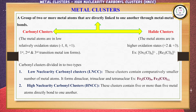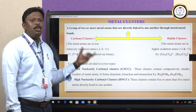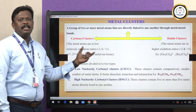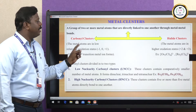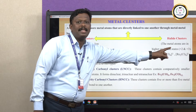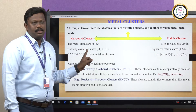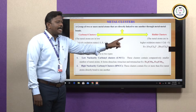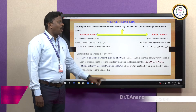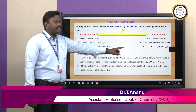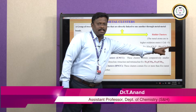In general, the metal cluster definition is: a group of two or more metal atoms that are directly linked to one another through metal-metal bonds. These metal clusters are further classified into two types: one is halide clusters and the other is carbonyl clusters. In halide clusters, the metal atoms are in the oxidation state of +2 and +3.